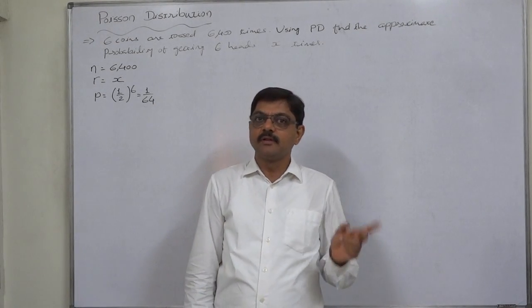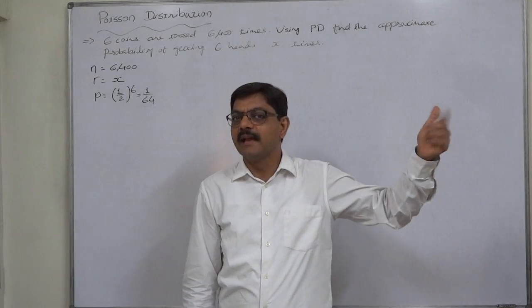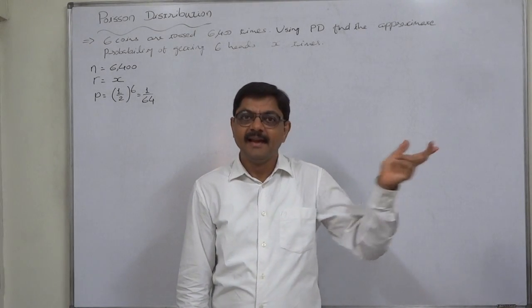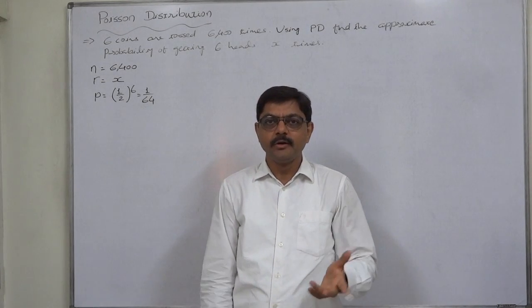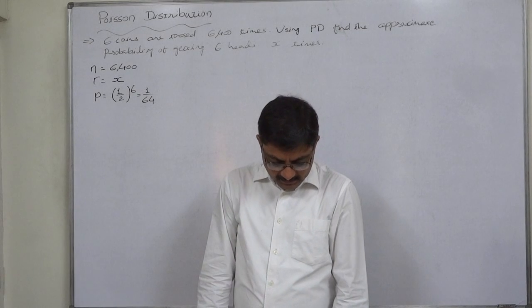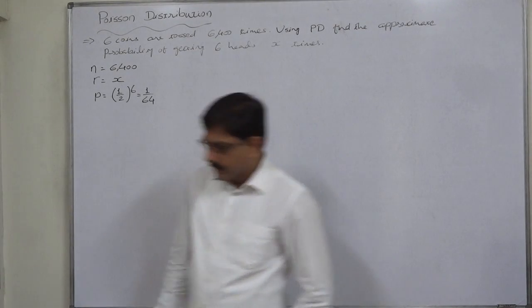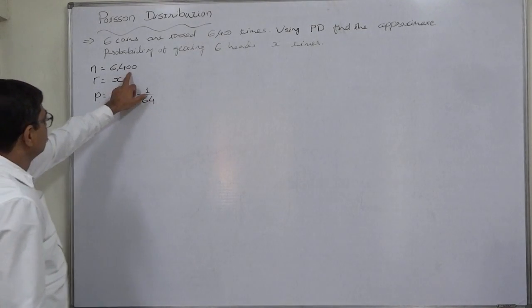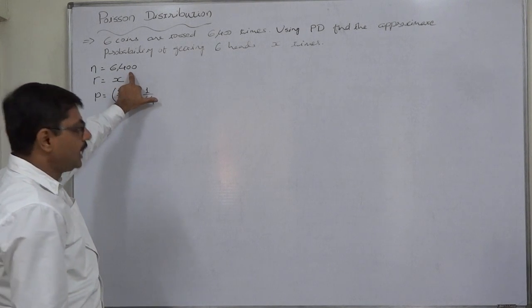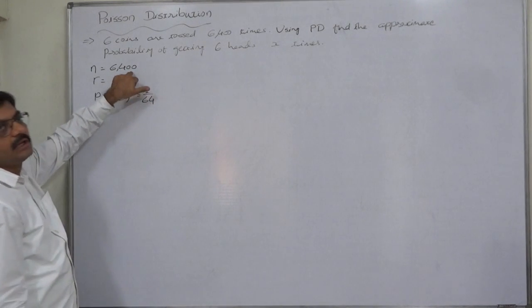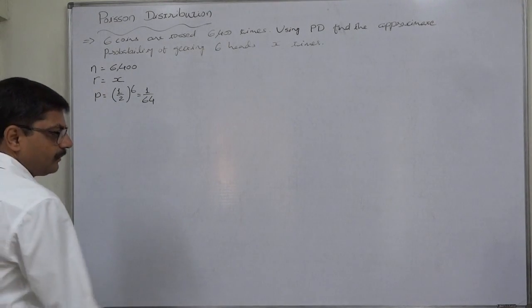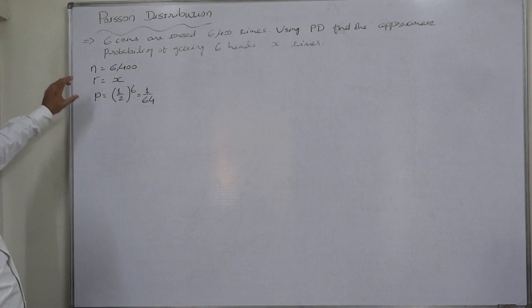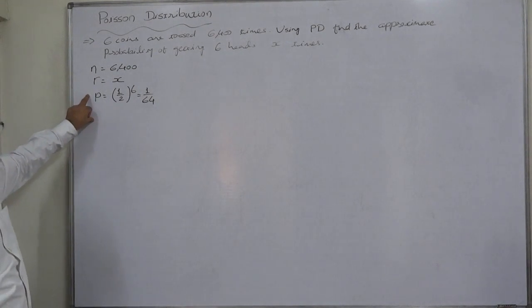That's why 6400 is n and x is r. We want to find probability of r equals to x. 6 coins are tossed 6400 times. n becomes 6400, so large we cannot even think about using binomial distribution. But the way will be via binomial distribution because we need mean.